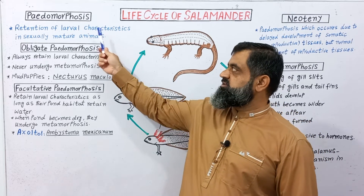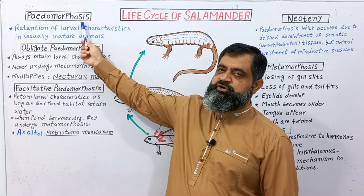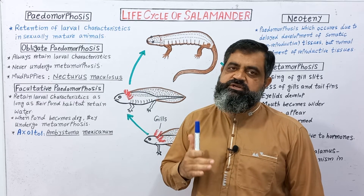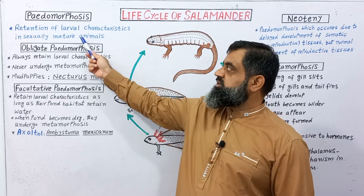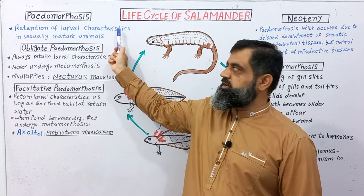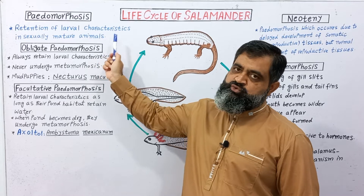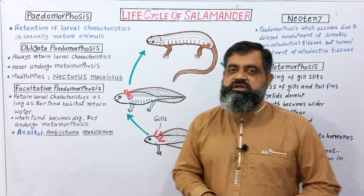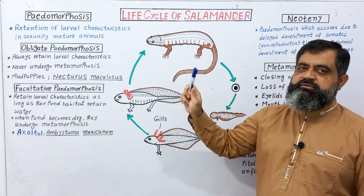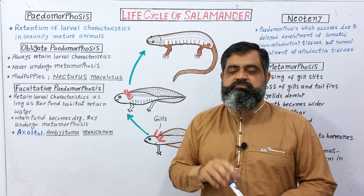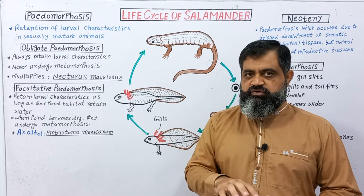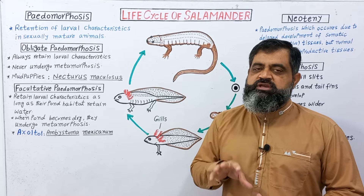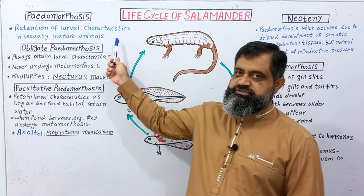Looking at the literal meaning of pedomorphosis: pedo means child, morph means form, and osis means condition. In this condition, retention of larval characteristics takes place in sexually mature animals. Usually sexual maturity is achieved at the adult stage, but in pedomorphosis the animal stays in larval form and attains reproductive ability while still in the larval form.